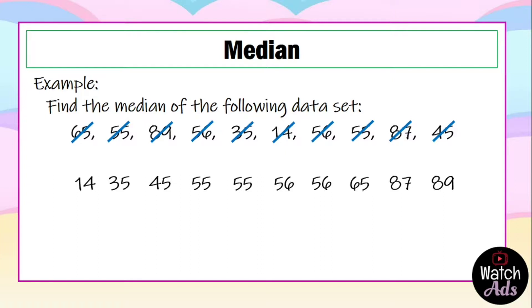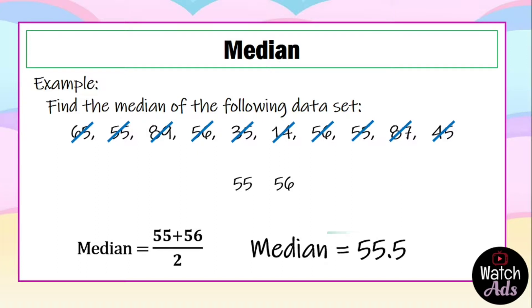We proceed to the second procedure, that is we remove two numbers, one from the leftmost portion and one from the rightmost portion. Then we continue doing it until we end up with two numbers. The two numbers are 55 and 56. Now how can we find the median? It's simply adding 55 and 56 all over 2, and our median is 55.5. That's our final answer.